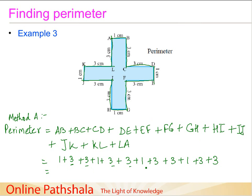Counting up the values: there are eight threes, so 8 times 3 is 24, and there are four ones, so 4 times 1 is 4. That gives us 24 plus 4 equals 28 centimeters. This approach works, but it's quite tedious — there is a smarter way.